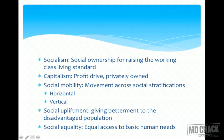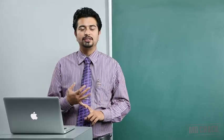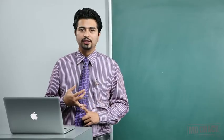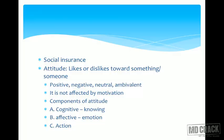Social upliftment is giving betterment to the disadvantaged population. Social equity is equal access to basic primary needs which can be called human rights — equal access to all essential structures is social equity, and it is very important as far as health is concerned. Social insurance is the insurance which society itself affords to its individuals so they can get help in times of crisis — examples include old age pension, concessions for railways and buses, and the Employee State Insurance Scheme.